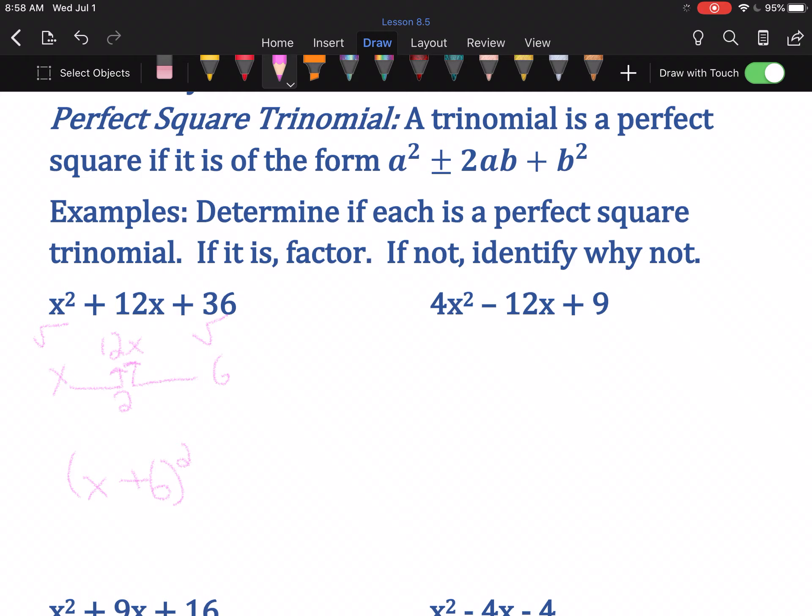The factorization is just x, or the square root of the first term, the square root of the third term, and the sign of the middle term in between. So the square root of x² is x. That's where the x comes from. The square root of 36 is 6. That's where the 6 comes from. And it is this plus sign that tells us to put a plus sign.